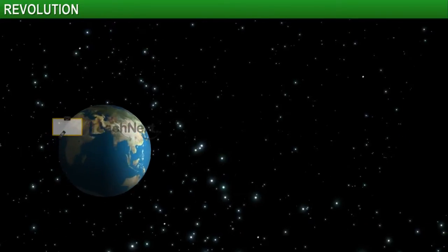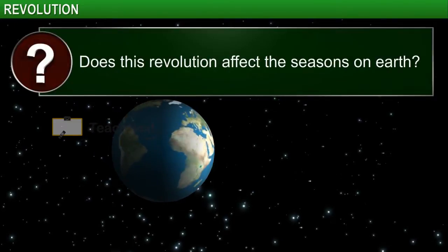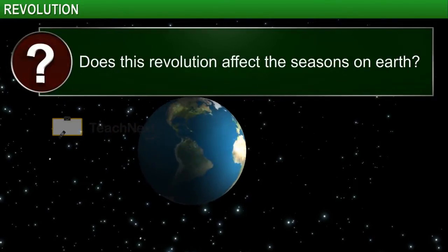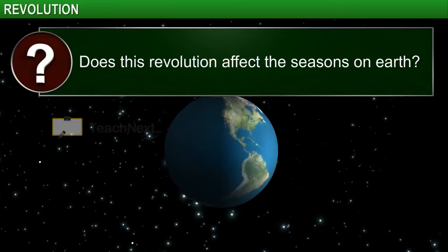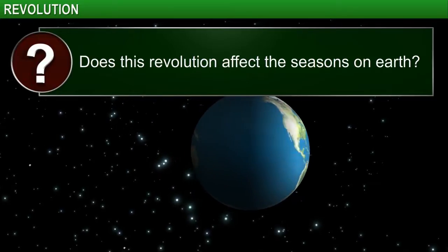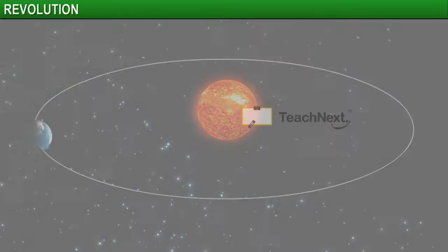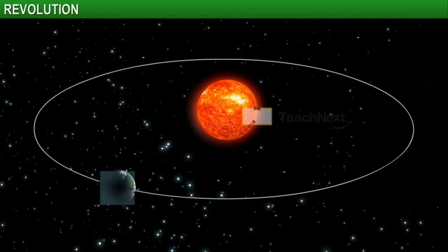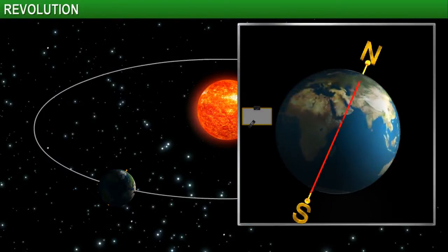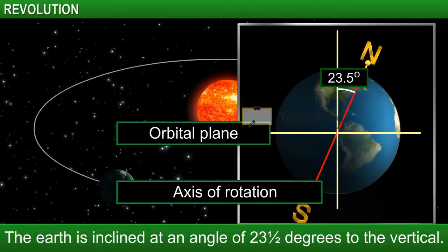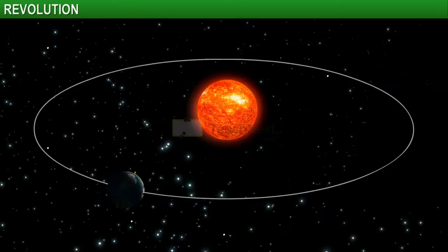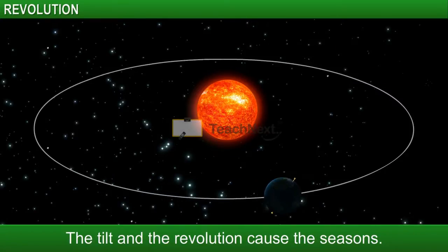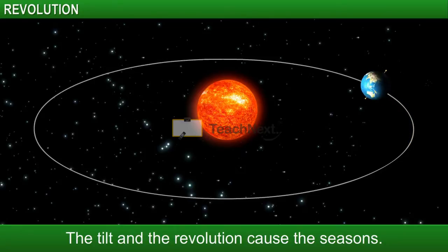So much for the number of days, but what about the seasons on our planet? Does Earth's revolution affect the seasons too? It does indeed. If you look carefully, the Earth is inclined in the same direction throughout its orbit. This tilt and the revolution is the reason that we have different seasons in different parts of the Earth.